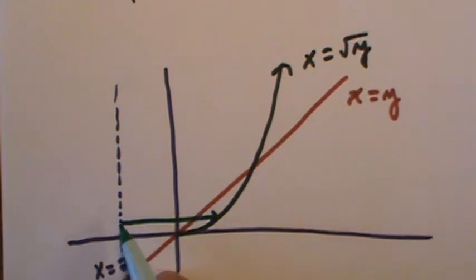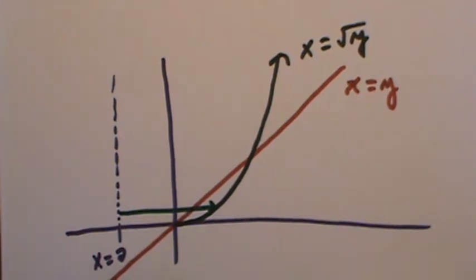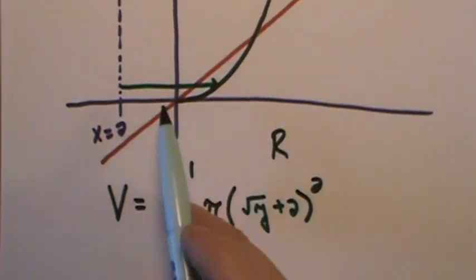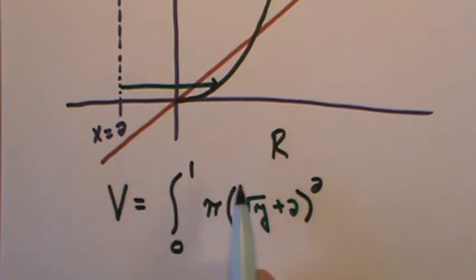That would create that distance. Radical y minus negative 2, which would be radical y plus 2. That gets squared. That's your big radius. That's going to be the complete distance. Radical y minus negative 2. That's your big radius that gets squared.